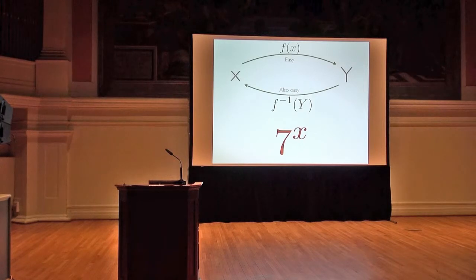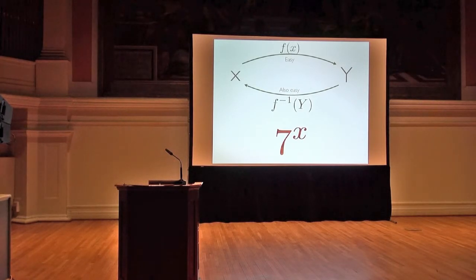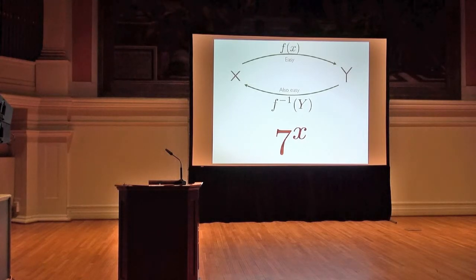So to recap: we have a function that's easy to compute in one way and also easy to invert. And this is how things should be in life, right? Easy to reverse your mistakes and so forth. And I'm going to do one thing right here — I'm going to throw a wrench into the situation. I'm going to make this function even easier to compute, and then I'm going to study the consequences of that.